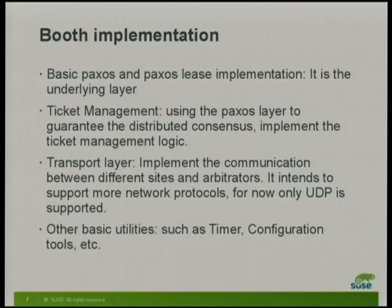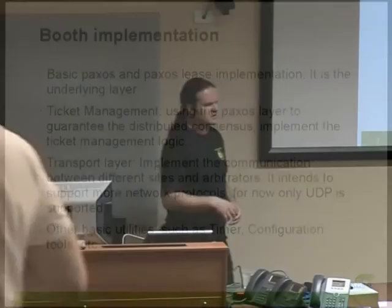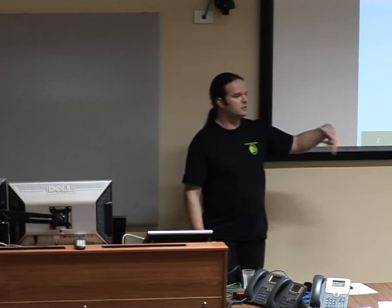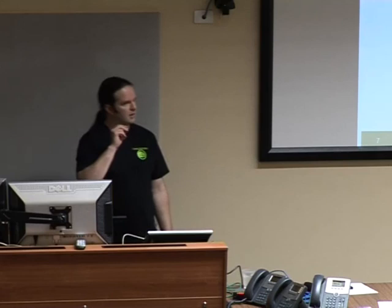There are some other bits and pieces: a configuration file parser, a timer. Tickets, once granted to a site, are periodically renewed. The timeout for a ticket defaults to 600 seconds, or 10 minutes. If a ticket is unable to be renewed within that time period, it will get revoked from that site. That expiry is configurable on a per-ticket basis if you want to change it.